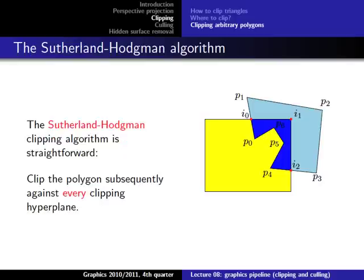One of them is the so-called Sutherland-Hodgman algorithm. These two algorithms are not in the book, but from the slides you should be able to understand them. If not, you can just Google them — you will find information online or in other books, which I always encourage. The basic idea of the Sutherland-Hodgman algorithm is that we clip the polygon subsequently against every hyperplane.